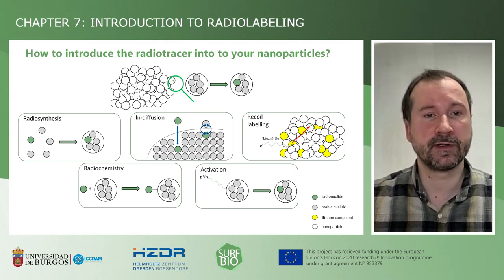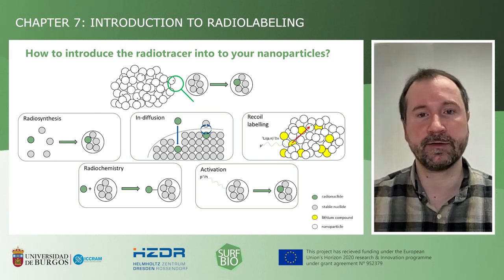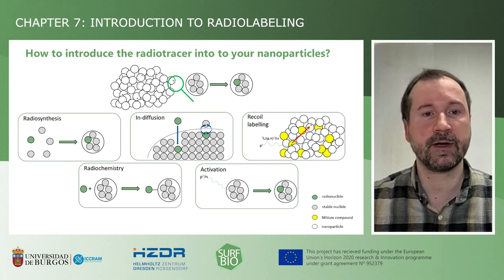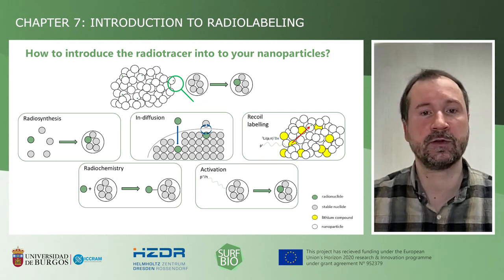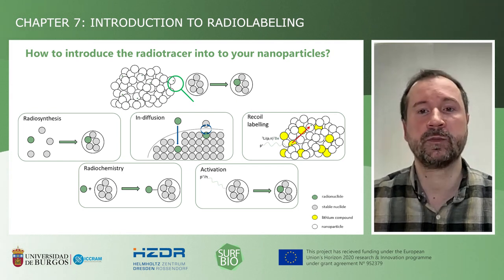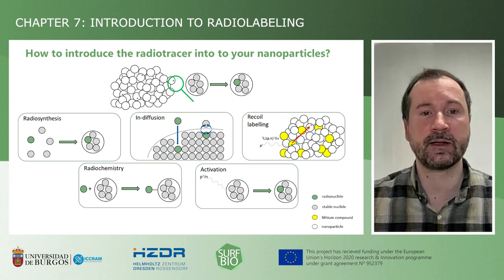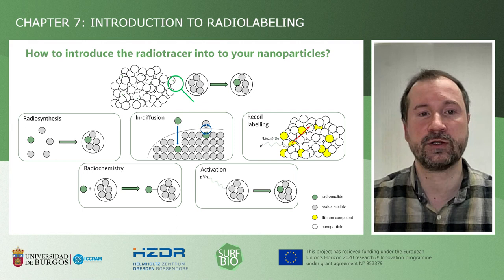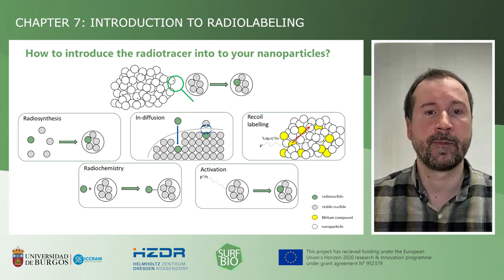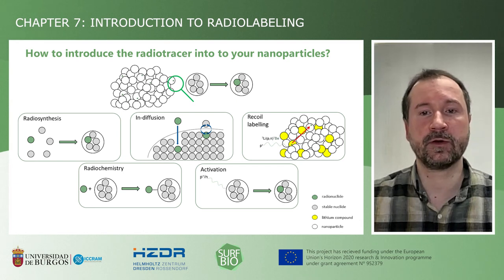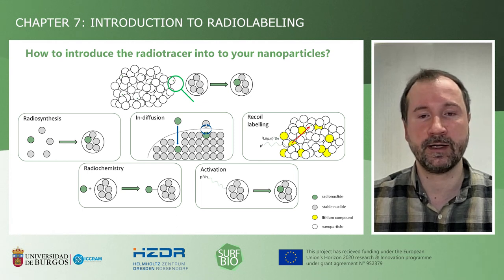We can perform a total synthesis of the nanoparticles using radioactive starting material, or we can bind the radiotracer to already existing particles using a suitable chemical reaction. Another method would be the indiffusion of radionuclides into surface defects at elevated temperatures. Or, in case you have access to a cyclotron or nuclear reactor, activation of the particles via proton or neutron irradiation using suitable nuclear reactions. If nothing else works, one can also attempt the so-called recoil labeling, where we use the recoil of a nuclear reaction triggered by proton irradiation to implant the radiotracer into the nanoparticles.